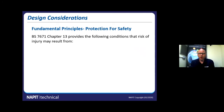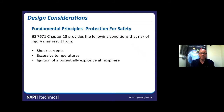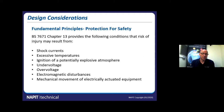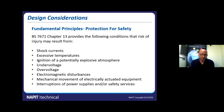Chapter 13 provides the following conditions that a risk of injury may result from: shock currents, excessive temperatures, ignition of potentially explosive atmospheres, undervoltage, overvoltage, electromagnetic disturbances, mechanical movement of any electrically actuated equipment, interruption of power supplies and/or safety services, and also arcing and burning. You need to take all of that into consideration when looking at your designs.